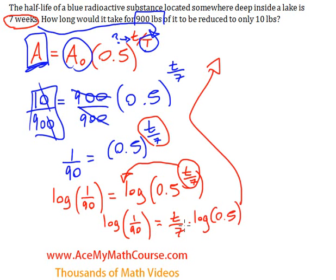Now I'm going to isolate t. I'll multiply both sides by seven first, canceling these out. We have seven times log of 1 over 90. Then I divide both sides by log of 0.5.